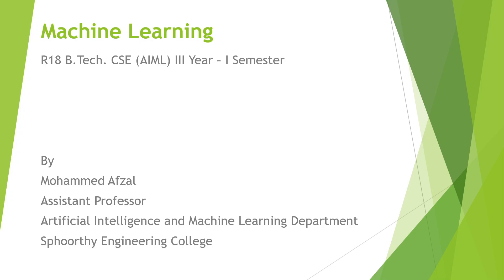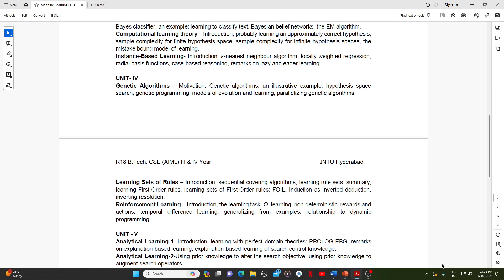Good morning students. Welcome to the machine learning online class. Today we will discuss the second chapter of your fourth unit. We have already discussed the first chapter of your fourth unit in your offline class — that is genetic algorithms. Today we will be focusing on learning sets of rules, the second chapter of your fourth unit. Once we complete this, I will cover reinforcement learning in one more online session, and with that we can conclude the fourth unit.